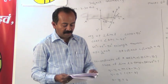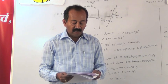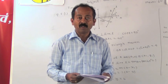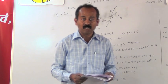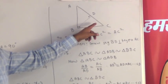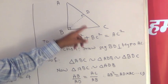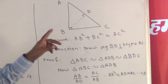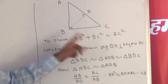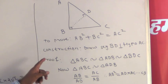Next, we have to prove that in a right-angle triangle, the square of the hypotenuse is equal to the sum of the squares of the other two sides — also known as the Pythagoras theorem. In right-angle triangle ABC with the right angle at B, we have to prove AB² + BC² equals AC². For the construction, we draw segment BD perpendicular to hypotenuse AC.